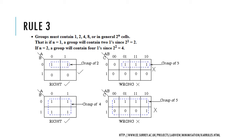In the first Karnaugh map shown, two ones are grouped together — a valid group of 2. In the second map, all four cells are ones and all are adjacent, so we can have a group of 4. In the three-variable Karnaugh map example, there are three ones that are adjacent, but we cannot group these three because a group of 3 is not a power of 2. Similarly, a group of 5 ones is also not allowed. Only powers of 2 are valid group sizes.